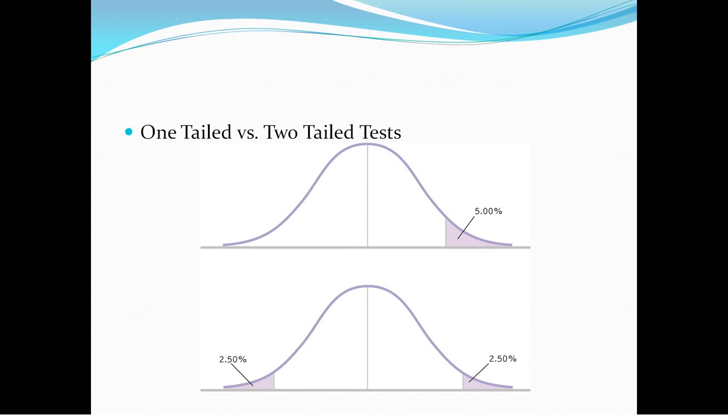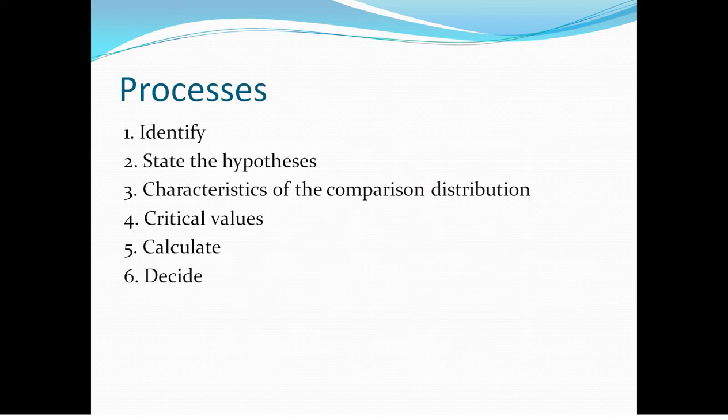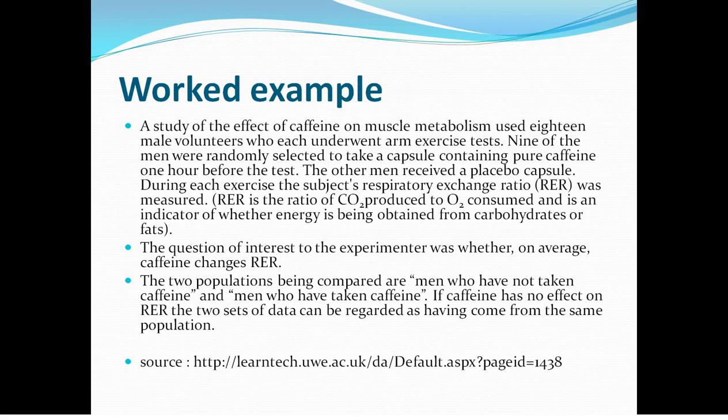There are six process steps we're going to run through with our worked example. We have two groups: took caffeine and did not take caffeine. Then you're looking at their respiratory exchange rate, RER, which is a measure of CO2 produced to O2 consumed. So it's whether caffeine has an effect on energy from carbohydrates or fats.